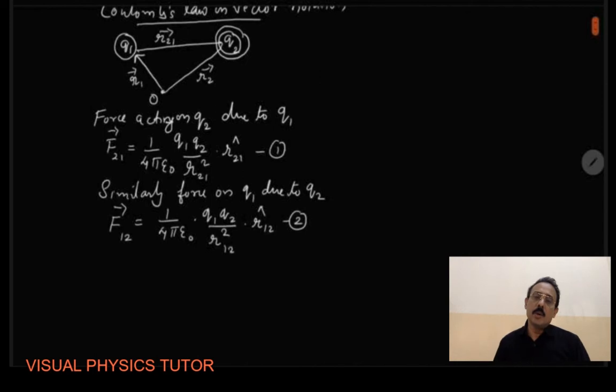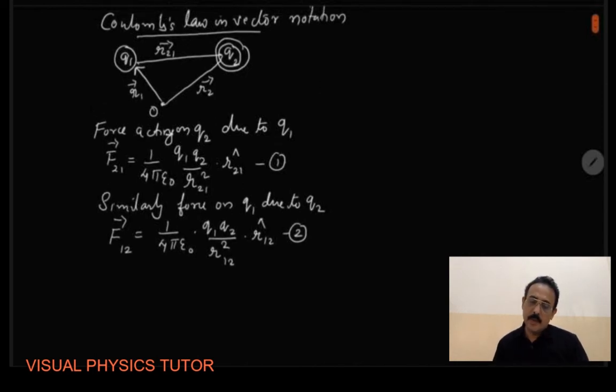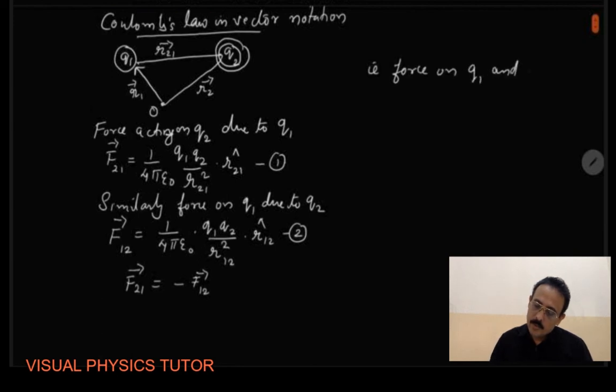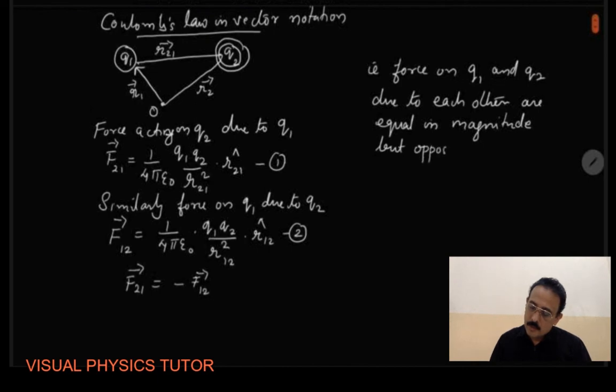Now we know that these forces acting are equal in magnitude but opposite in direction. So we can write here F21 vector is equal to minus F12 vector, that is force on Q1 and Q2 due to each other are equal in magnitude but opposite in direction.